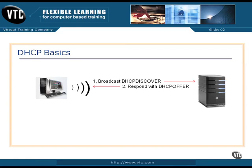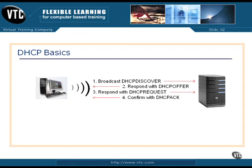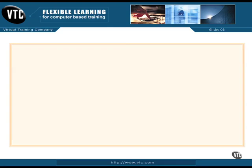The DHCP server sees the Discover message and responds with a DHCP Offer — essentially saying it's available and can help. There could be two DHCP servers that hear the broadcast, so we need to avoid assigning duplicate IP addresses. The client then responds with a DHCP Request, asking for configuration information, and the server replies with a DHCP Acknowledge (ACK). The four steps are: Discover, Offer, Request, and ACK — make sure you know those before the exam.